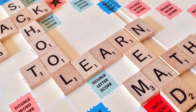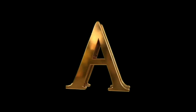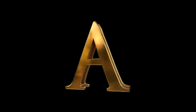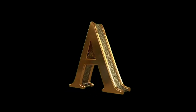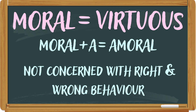Root words help us memorize a group of words that have approximately the same meaning. The first root word we have is the word 'a'. When we attach 'a' to a word, its meaning becomes negative. For example, we have the word 'moral'. When 'a' is attached to it, it becomes 'amoral'. So 'moral' means virtuous, while 'amoral' means someone who is not concerned with good and bad behavior. So 'a' has the quality of making a word the exact opposite of its parent word.